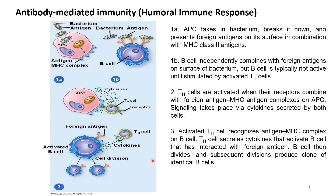Now look at figure 3. Activated T-helper cells will recognize the complex and will bind to it via its T-cell receptor. The activated T-helper cells will release cytokines to the B-cells, and the B-cells will be activated. The B-cells will then divide and produce a clone of identical B-cells.